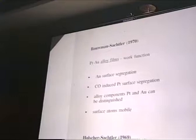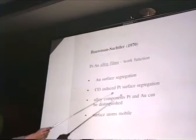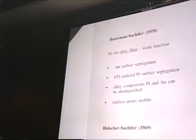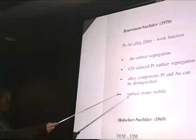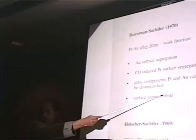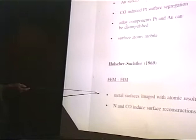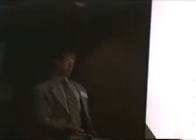The surface composition is different from that of the bulk composition, and it also changes with the chemical composition of the atmosphere. It was concluded that you can distinguish the component atoms on the surface — for example, CO can distinguish platinum from gold. At that time, there was a very notable conclusion: it was believed that you have a common rigid d-band, and that the component atoms are identical. It was also concluded that the surface atoms are quite mobile, even at room temperature.